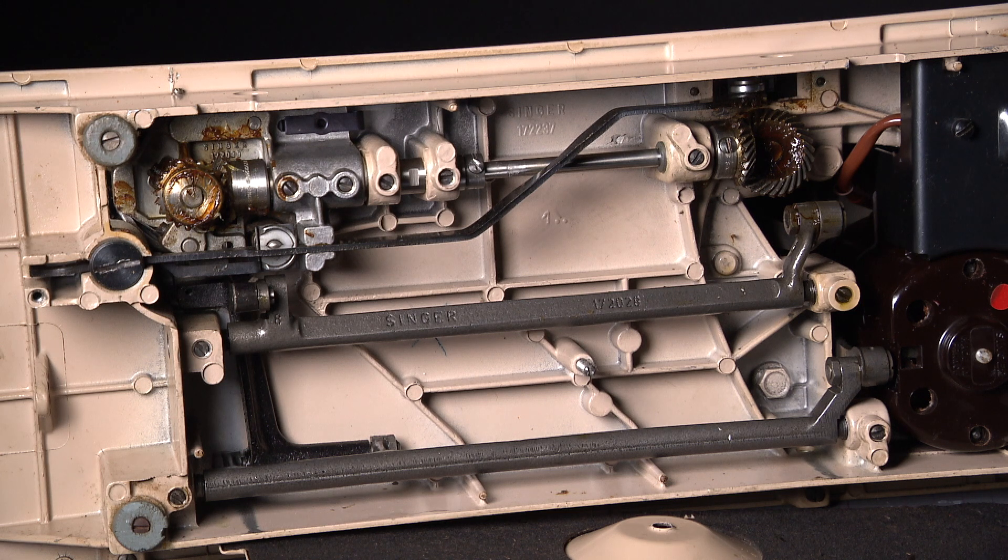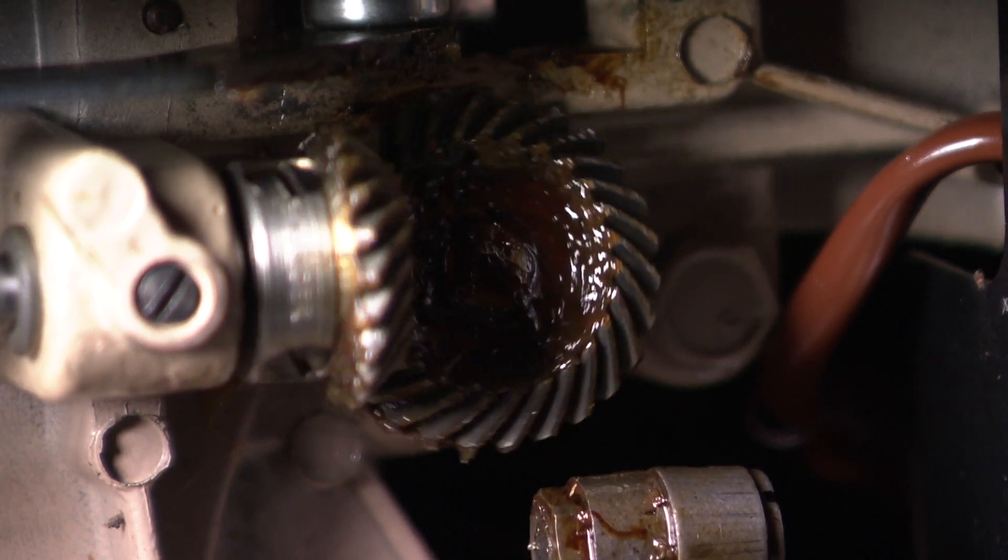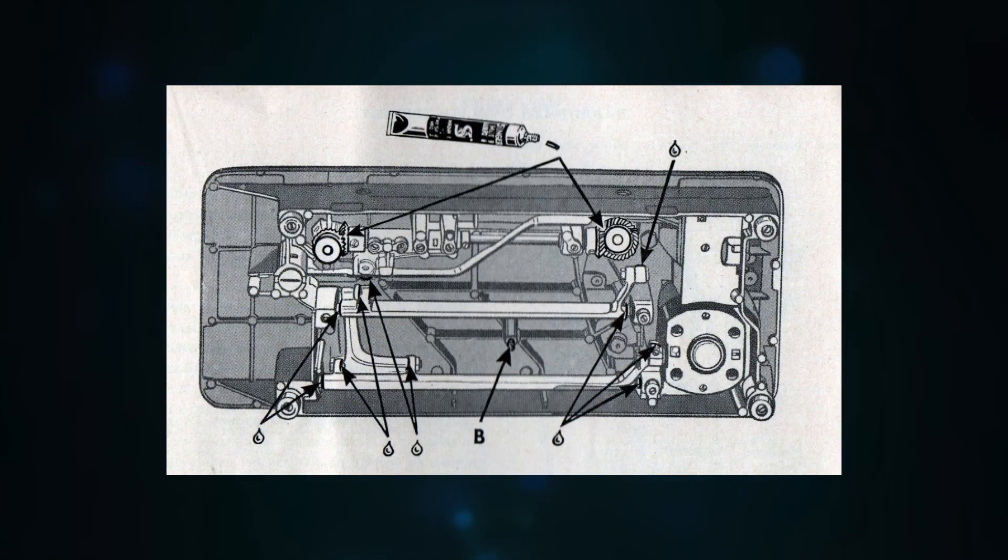Tilt the machine and look underneath. Now turn the balance wheel and now you have an idea what to oil. Again, there are 11 oiling points below the deck.